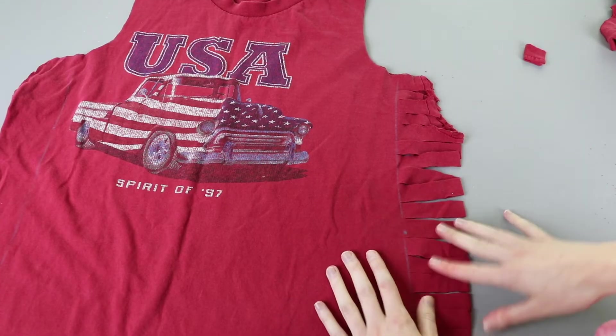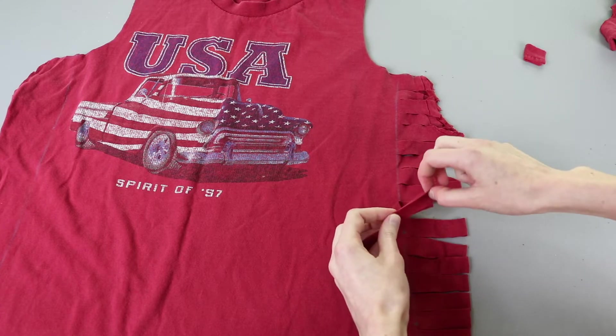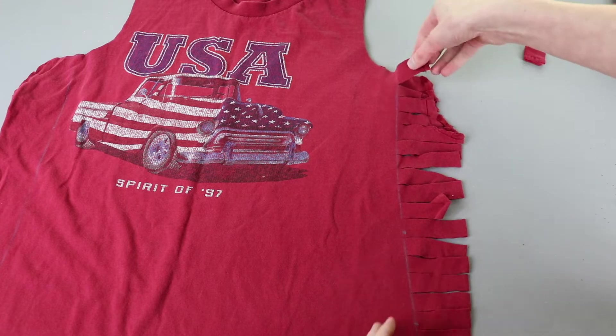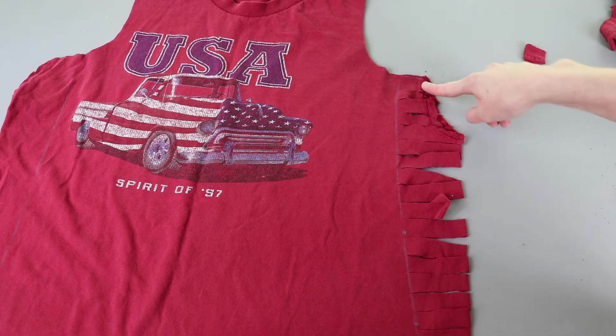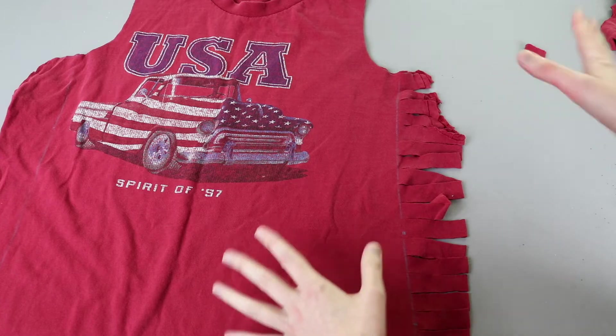So now I've got the fringe cut but I ended up with two different types of sections. Some of these are still together in a loop and some of these are already separated. The ones that are already separated I'm going to tie those first and then I'll cut a few, tie, cut a few, tie. Let me show you what I mean.